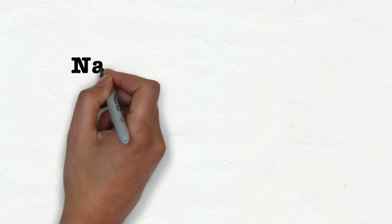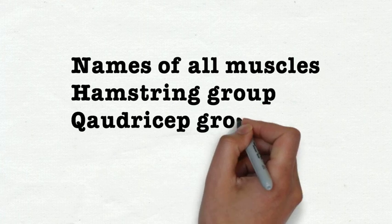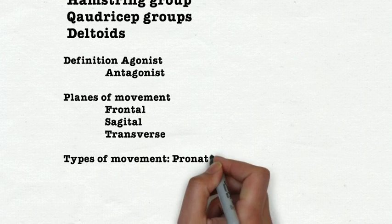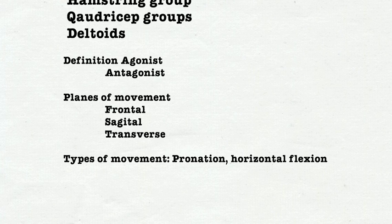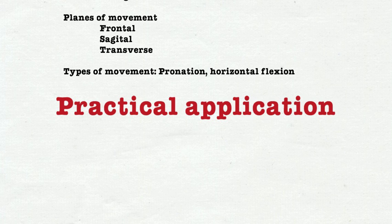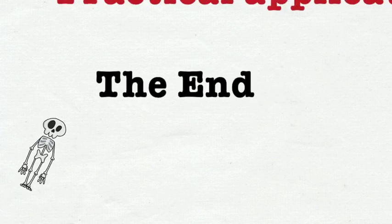So just to recap what we've been through, and there has been quite a few. So there's names of all the muscles. Remember the hamstrings and the quadricep group are very important. And also the deltoids. We've got the definition, the agonist, the antagonist, and the planes of movement. And the types of movement as well. And there's just a couple of examples there. And remember, practical application is where you're going to score your marks. All right. Thanks very much. And I'll speak to you soon.